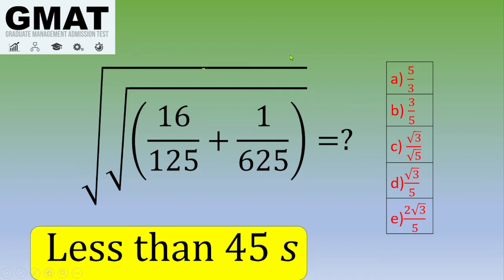This exercise asks you to calculate the square root of square root of 16 over 125 plus 1 over 625. If you want to give it a try, pause the video. Otherwise, let's see the solution.